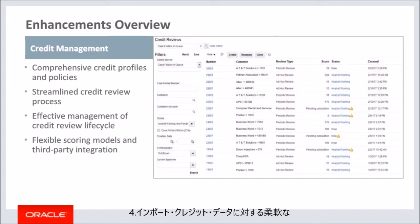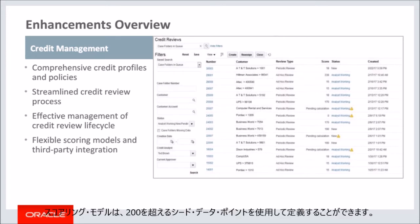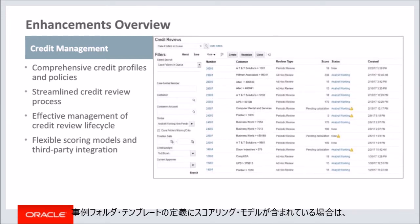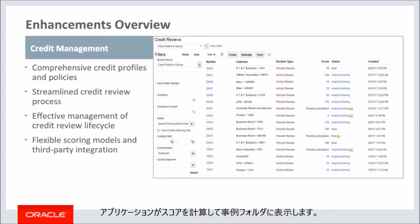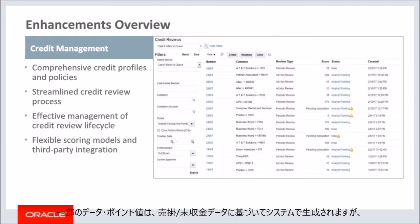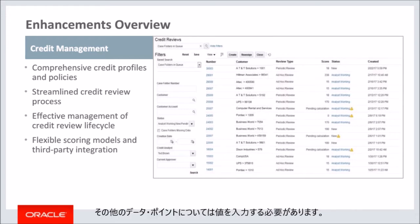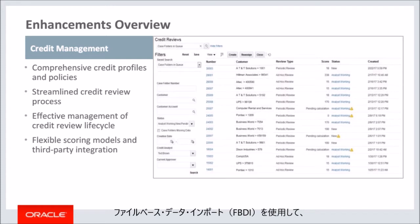Last but not the least, flexible scoring models and third-party integration to import credit data. You can define scoring models using more than 200 seeded data points. If a scoring model is included in the case folder template definition, when a case folder is created based on the template, the application will calculate the score and represent it on the case folder. Some data point values are system derived based on the receivables data. For other data points, you need to populate their values. You can use the provided Excel spreadsheet template and file-based data import, FBDI for short, to import the data point values for customers and accounts.